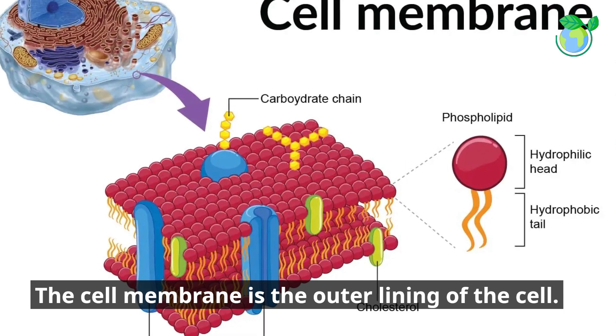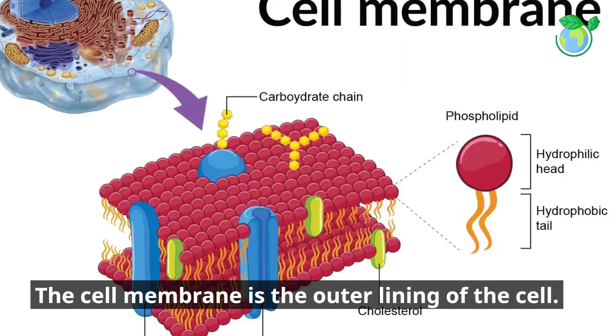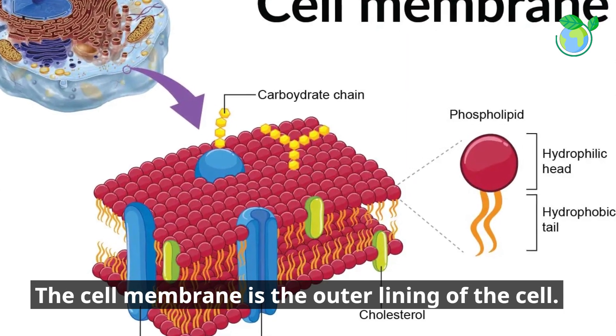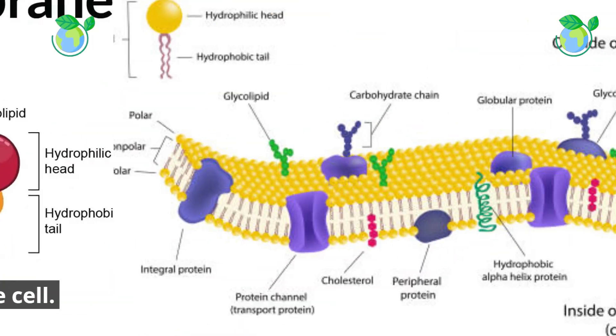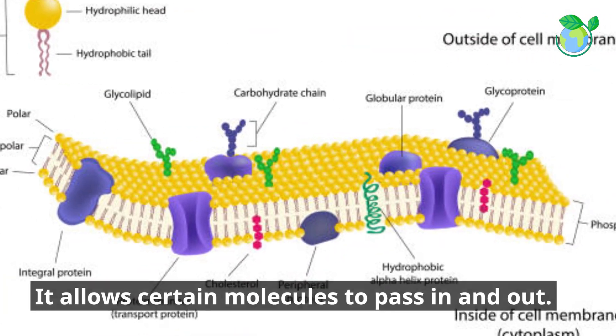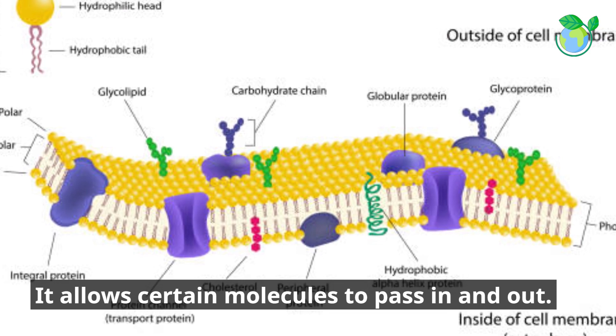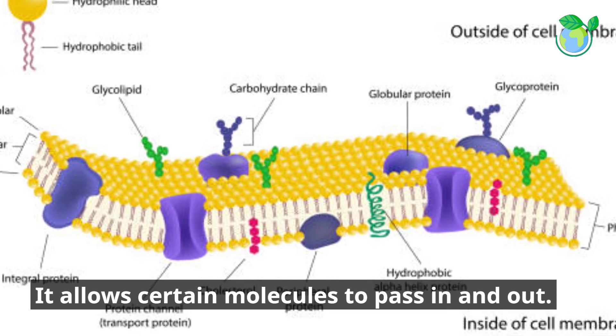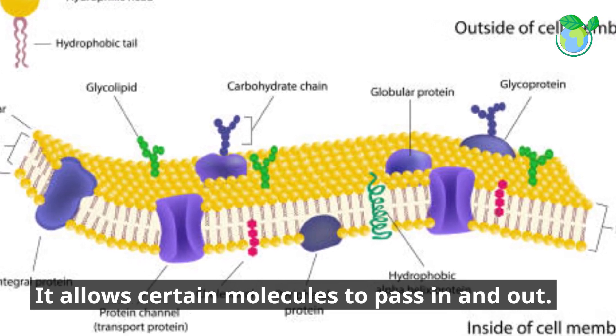The cell membrane is the outer lining of the cell. It allows certain molecules to pass in and out.